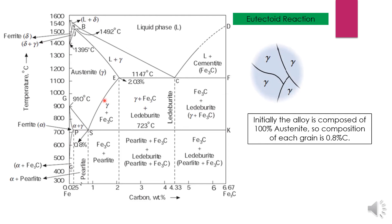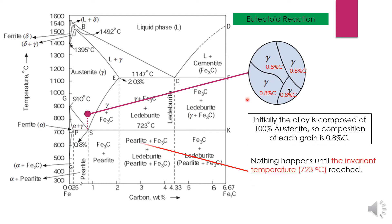Initially the alloy is composed of 100 percent austenite in this region, so composition of each grain is 0.8 percent carbon. Nothing happens until the invariant temperature is reached.